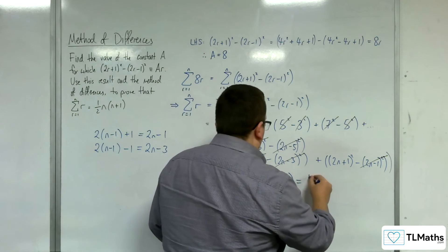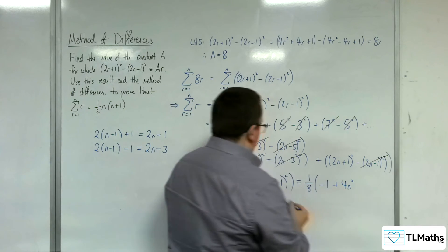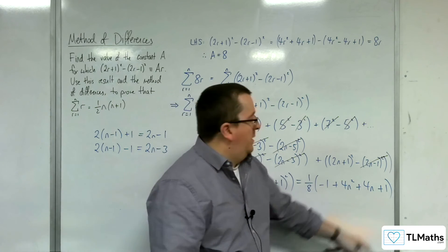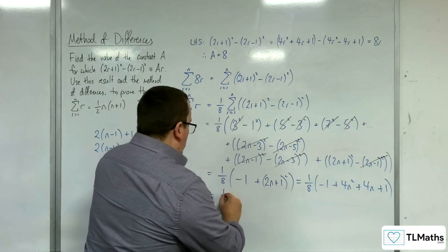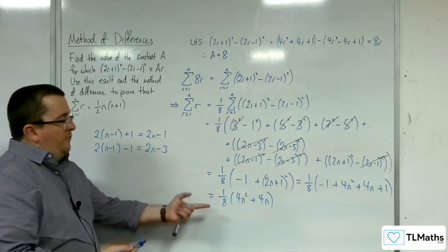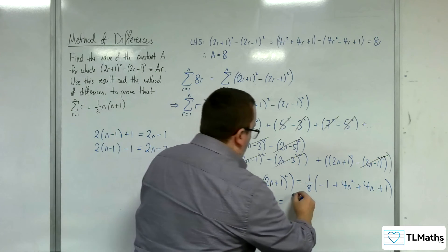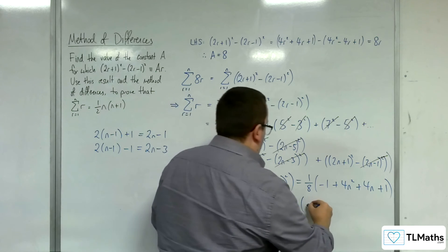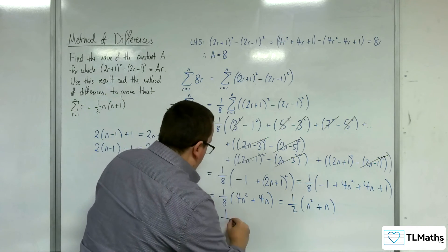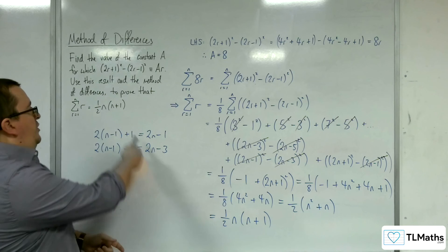Now I want to expand this out. I've got one eighth times (−1 + 4n² + 4n + 1). The −1 and the +1 cancel, so I've got one eighth times (4n² + 4n). I can factor the 4 out, giving one eighth × 4, which is a half. So I've now got a half times (n² + n), and factoring the n out leaves me with ½n(n+1), which is what was required.